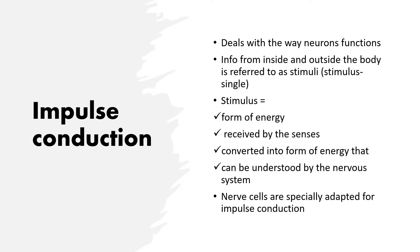Impulse conduction deals with the way neurons function. Information from inside and outside the body is referred to as stimuli — the singular word being stimulus. A stimulus is a form of energy which is received by the senses and then converted into a form of energy that can be understood by the nervous system.